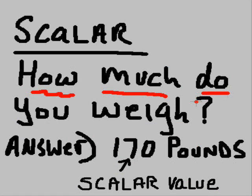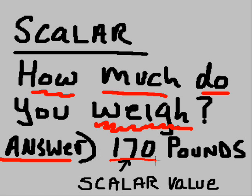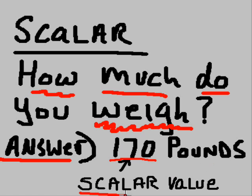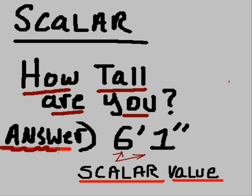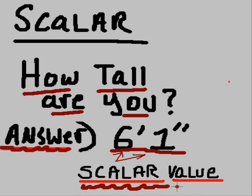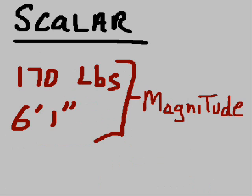A scalar has no direction — it's not associated with things like north or south or east or west. It's just a number. For example, if you're asked how much do you weigh, your answer might be 170 pounds. That number is a scalar value. Or how tall are you? Six foot one inch — that is also a scalar value. No direction, just a straight number. These answers are answers of magnitude.